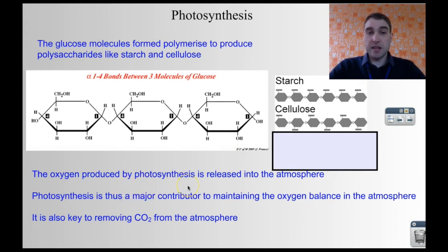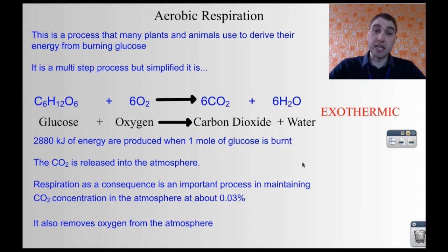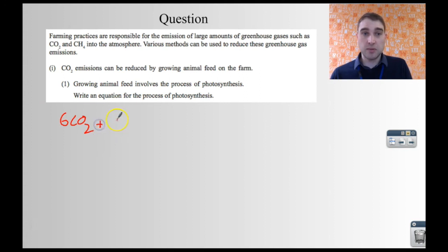If we look at the oxygen cycle, we can see similar things happening. We get oxygen being absorbed in respiration and then being emitted back out in photosynthesis. Both cycles are joined where we have photosynthesis and where we have respiration, meaning that photosynthesis and respiration are very interconnected in terms of global cycles, but they're also interconnected in organisms.